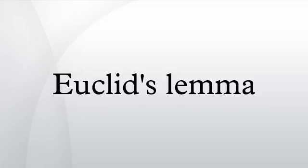Let P be a prime number, and assume P divides the product of two integers a and b. Then P divides a or P divides b. Equivalent statements are: if P does not divide a and P does not divide b, then P does not divide ab. If P does not divide a and P divides ab, then P divides b.